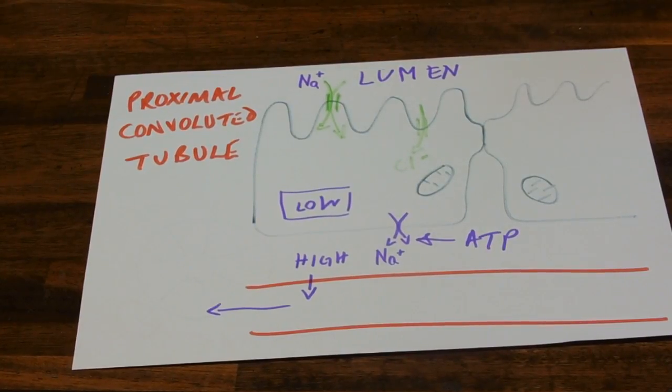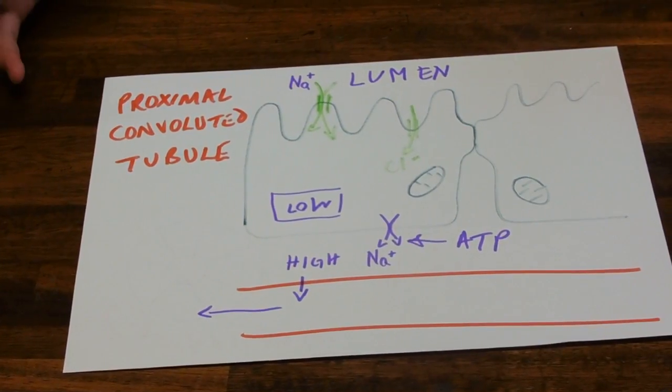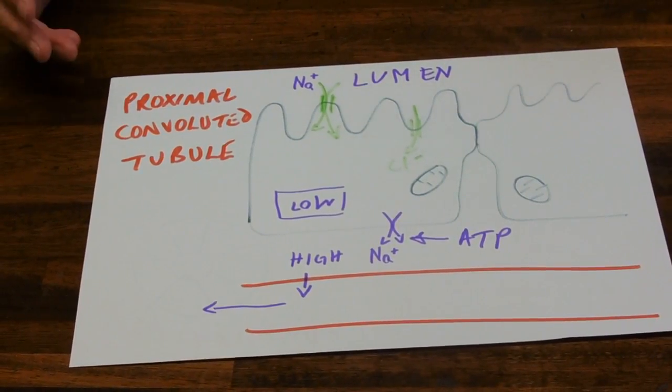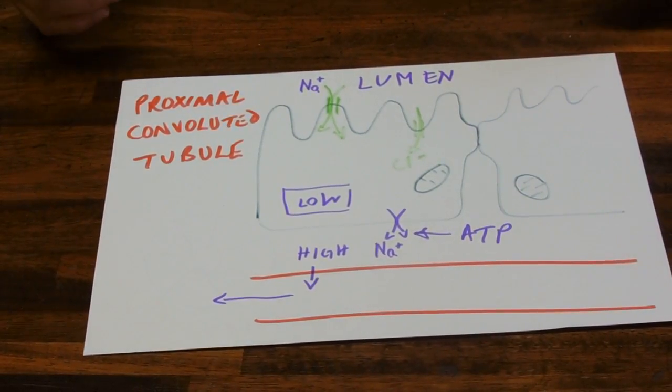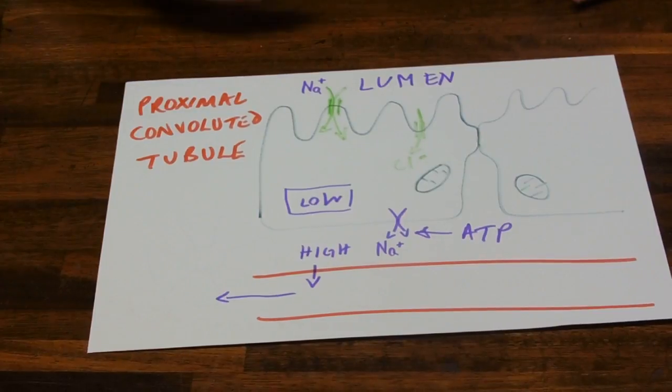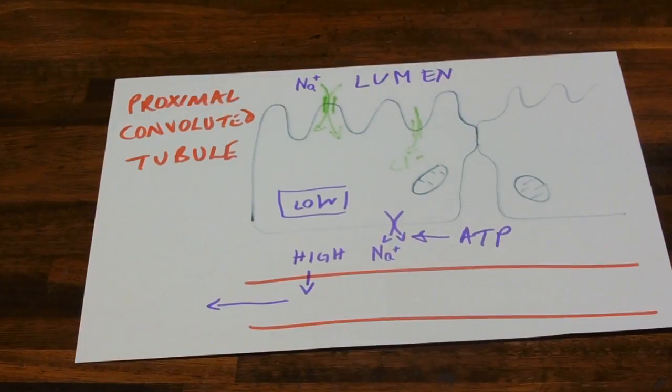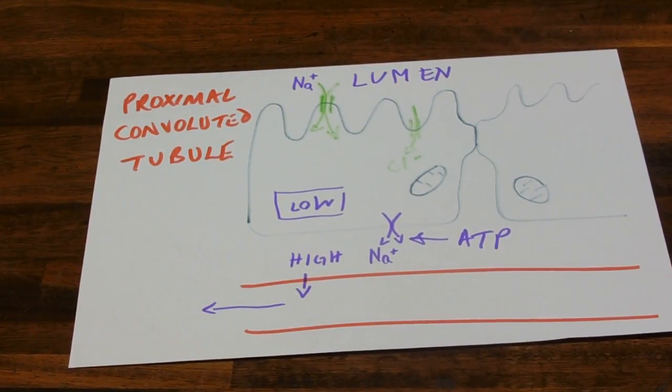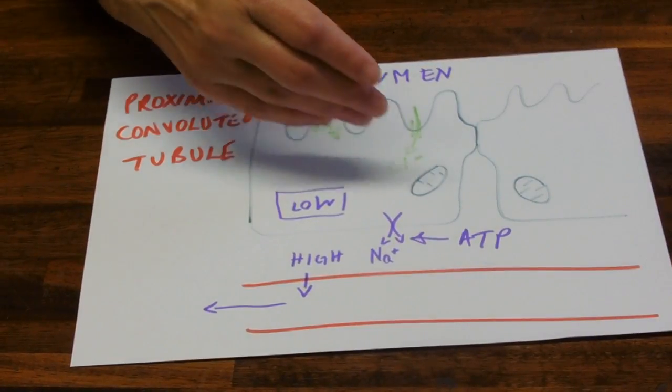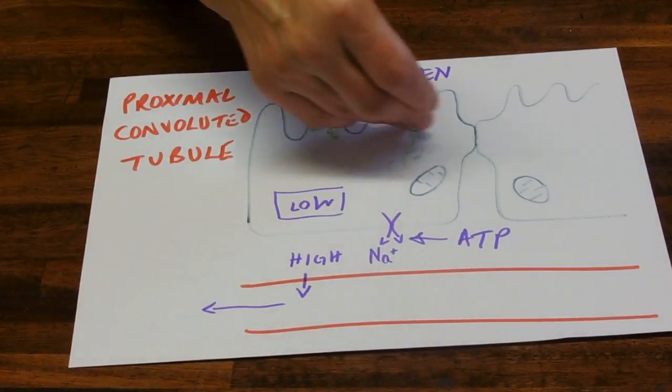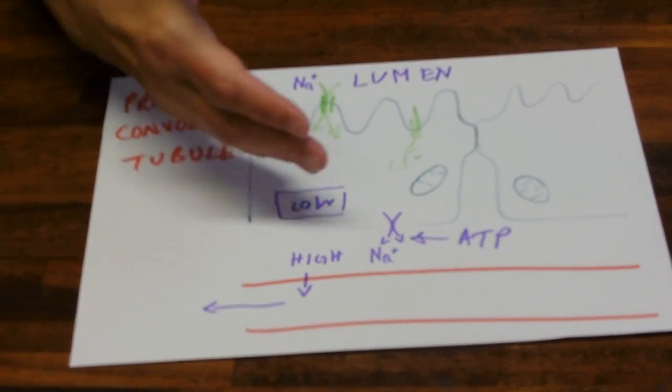So water, let's deal with water now. The proximal convoluted tubule reabsorbs about 90% of the water at this point from the filtrate. So what's going on here is we are moving solute in the form of soluble sodium ions and glucose and amino acids into the cells, and chloride ions, all of those will lower the water potential in here, and water will follow afterwards.